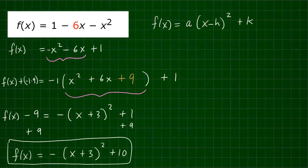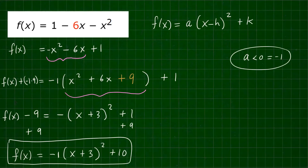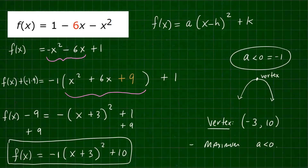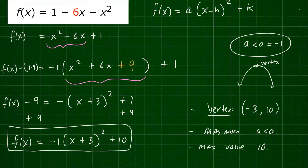Adding 9 to both sides to isolate f(x), we get f(x) = negative (x + 3)² + 10. That is the standard form. Since a equals negative 1, which is less than zero, the parabola opens downward. The vertex is (negative 3, 10), and this is a maximum. The maximum value is 10, and it occurs at x equals negative 3.